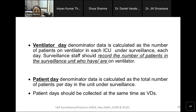A ventilator day is calculated as the number of patients who are on ventilator in each ICU under surveillance each day. When your surveillance staff goes to the ICU, you just note how many patients are on the ventilator, and at the end of the month you add the numbers — that gives you the ventilator days. The patient day is the total number of patients physically present in the surveillance unit, collected at the same time as the ventilator day.